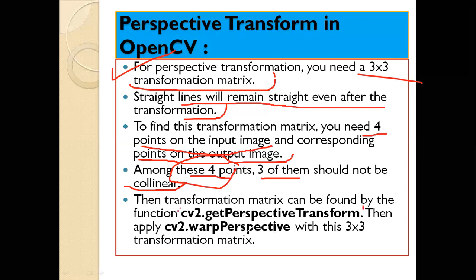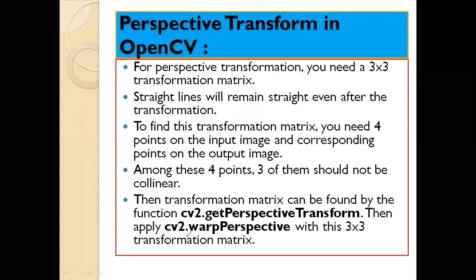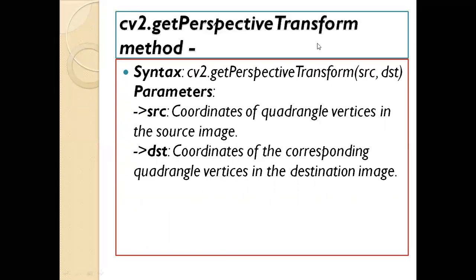We'll use the function cv2.getPerspectiveTransform — easy to remember. This will be used to find out the transformation matrix. Once we find this transformation matrix, as usual we will use cv2.warpPerspective function for the output. We'll apply this on the 3x3 transformation matrix that we have obtained using cv2.getPerspectiveTransform.